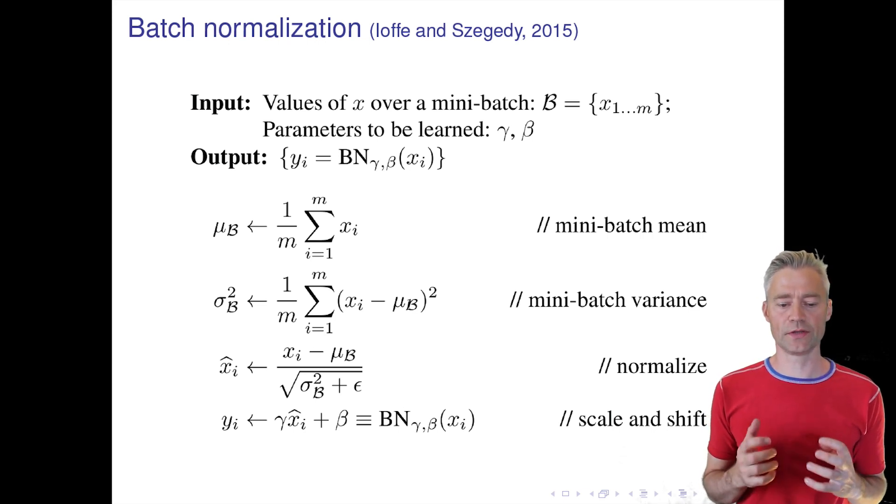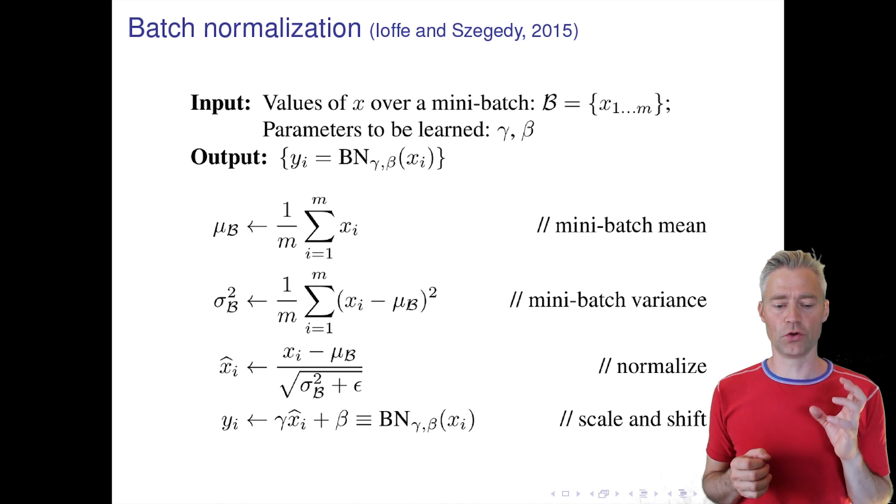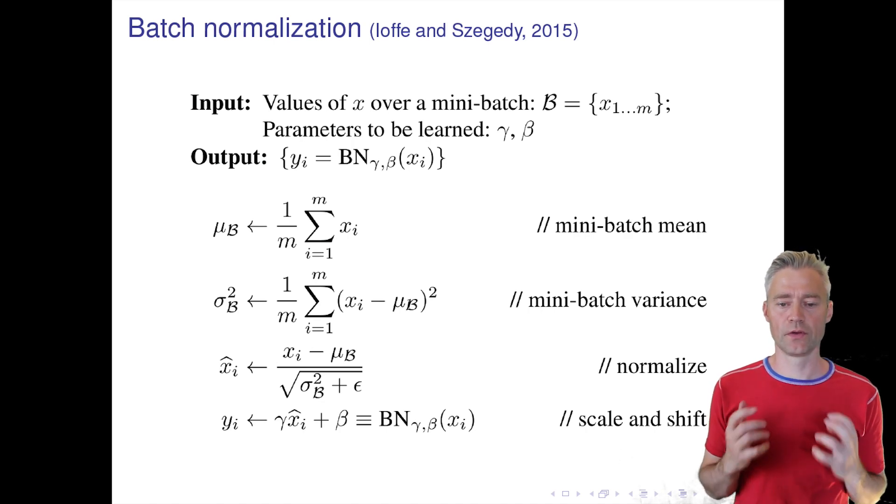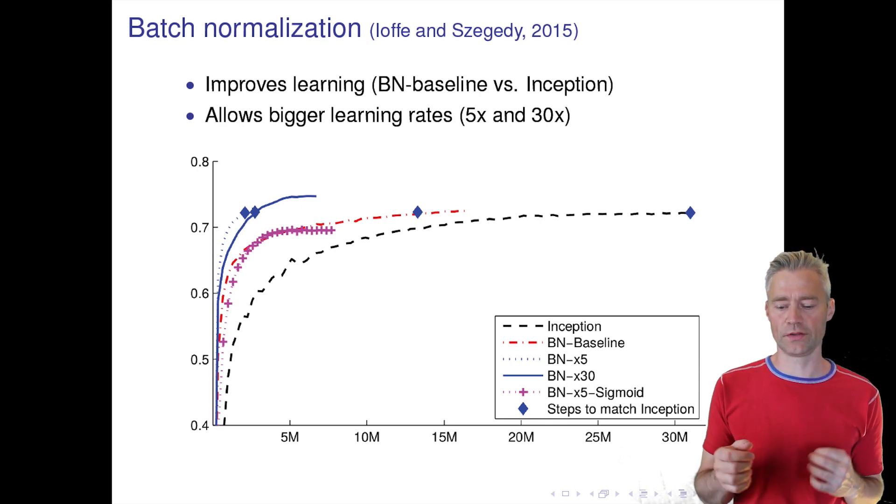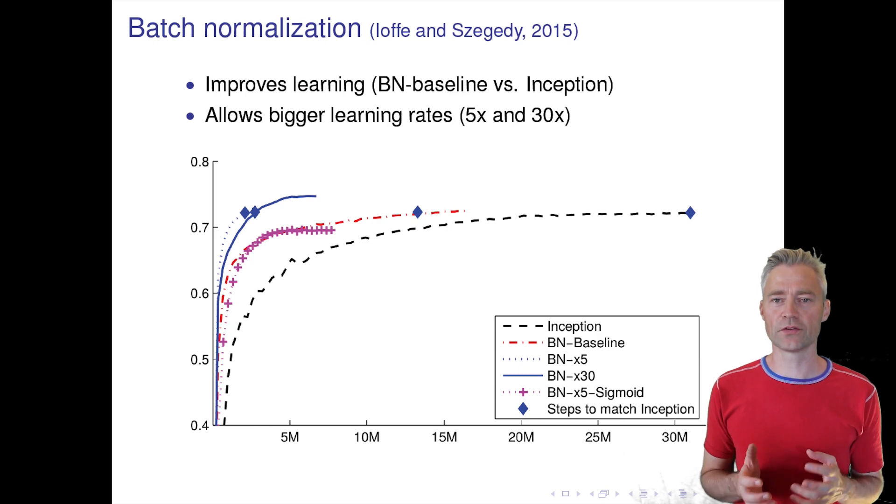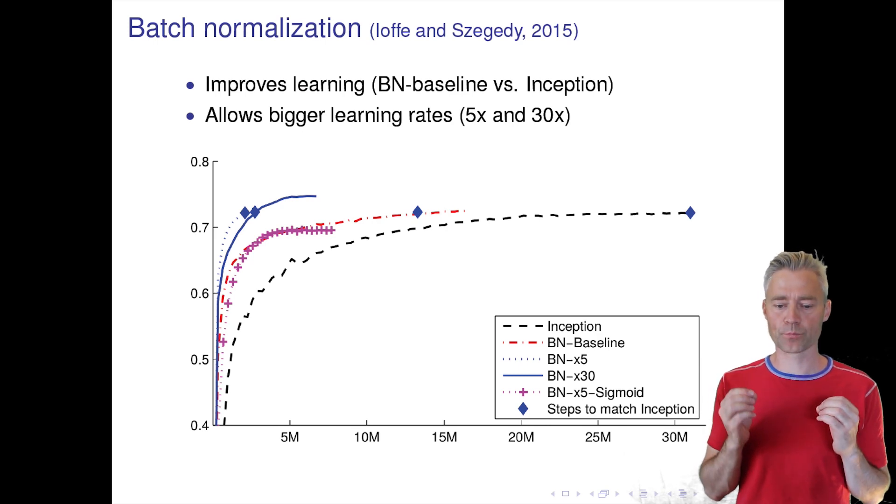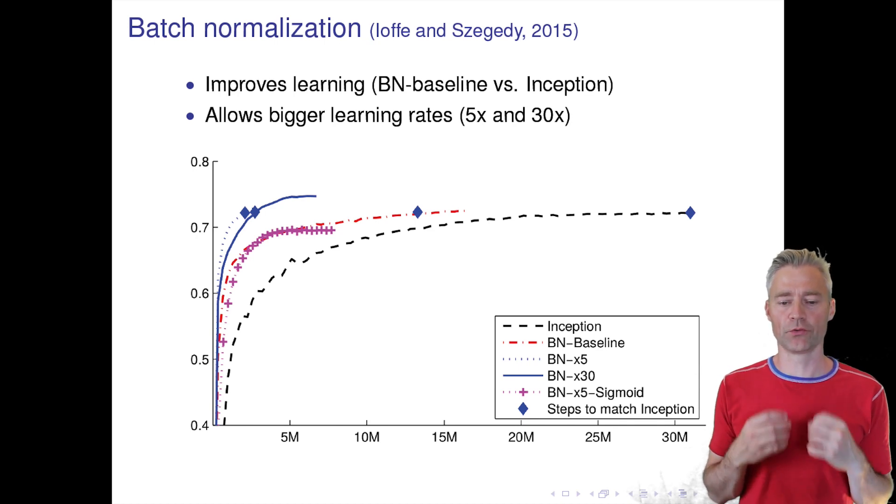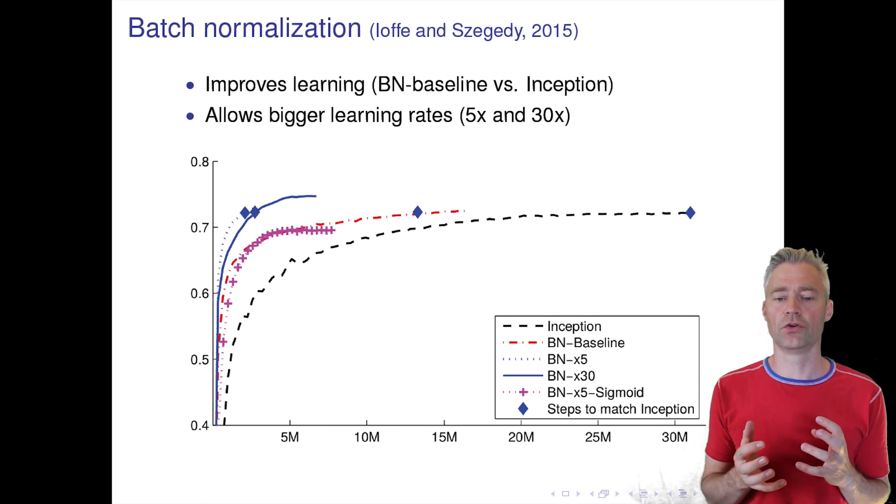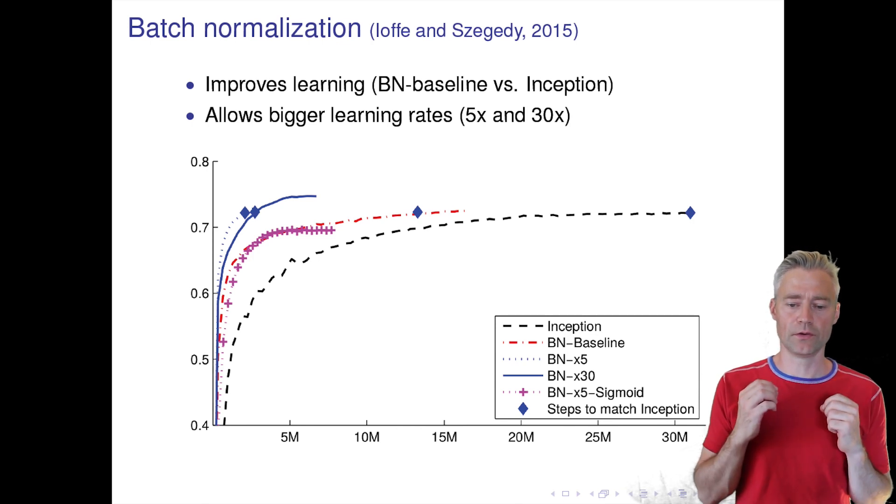So the idea now is that we have kind of taken out the scale of the network and instead we learn this gamma and beta, and this has actually turned out to lead to quite fast convergence. You can also look at this as a type of regularization because in regularization we try to make the network not overfit.